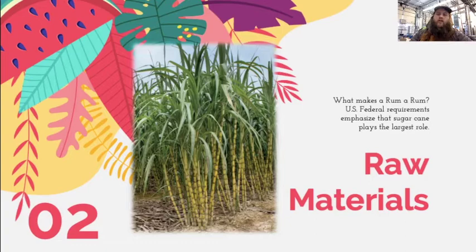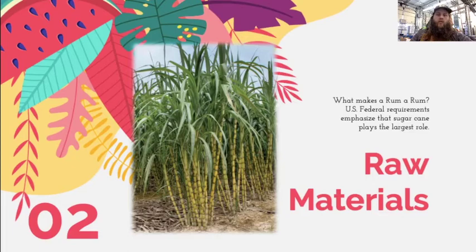So let's start with the raw materials. Raw materials used to produce a rum are predominantly what makes a rum a rum. The basic agreed-upon principle ingredient for rum is as simple as sugarcane and the byproducts thereof. Whereas tequila, bourbon, and cognac all must be made in a specific country, rum doesn't have any regional requirements and doesn't have a unified worldly agreement on what truly defines a rum.